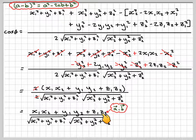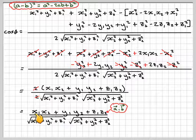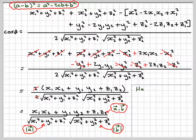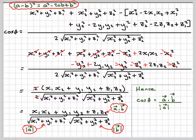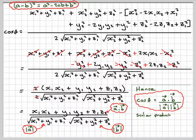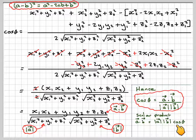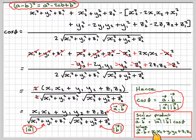The numerator is known as a dot b — the dot product or scalar product — and the denominators are the magnitude of a and the magnitude of b. Hence, cos theta equals a dot b over |a||b|. This is what we were asked to prove. The scalar product can be rewritten as a dot b equals |a||b|cos(theta), where a dot b is also written as x1·x2 + y1·y2 + z1·z2.